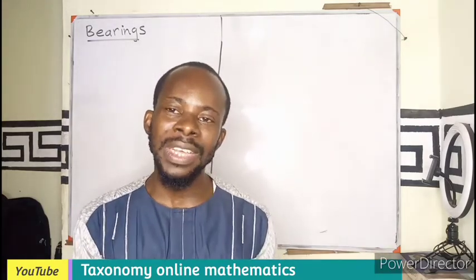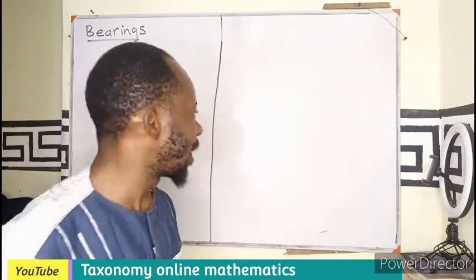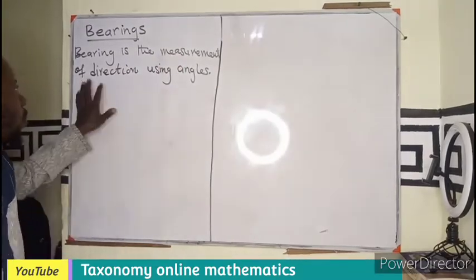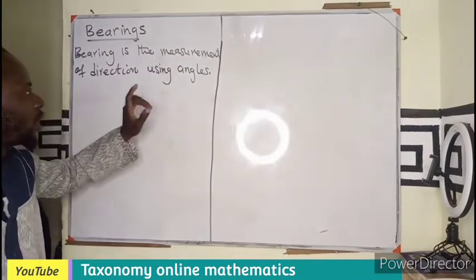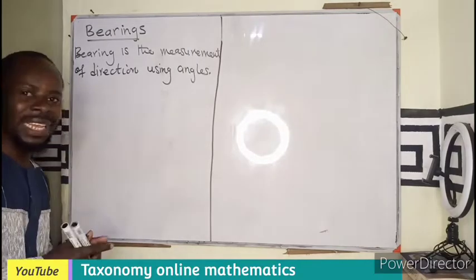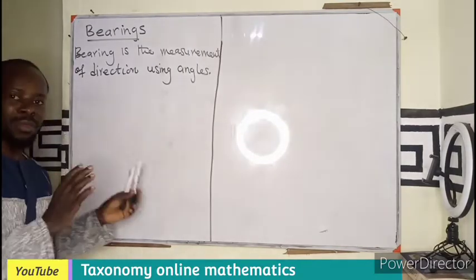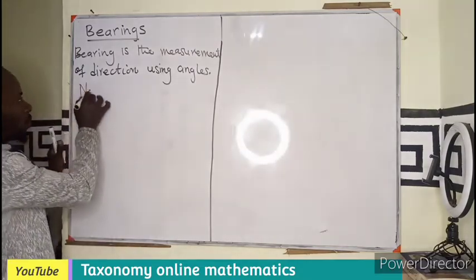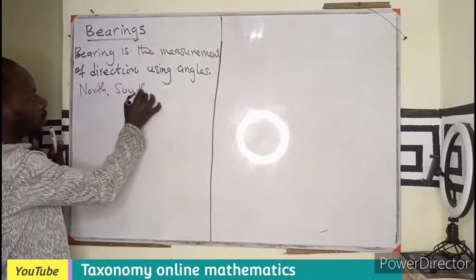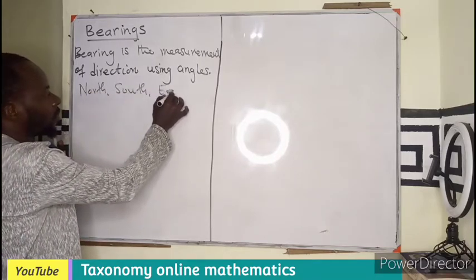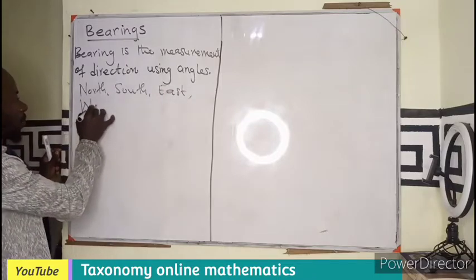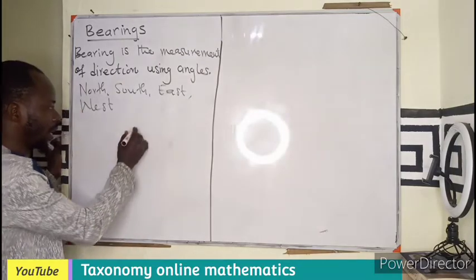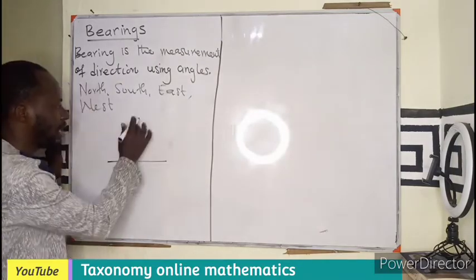Our north, south, west and east. So in a nutshell, bearings are just measurement of direction using angles, made possible using the cardinal point. North, south, east and west. To put it diagrammatically, we can have our cardinal point in this way.